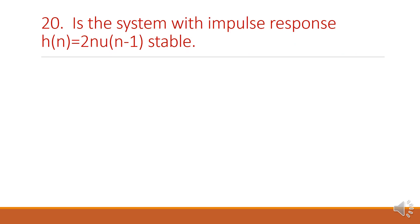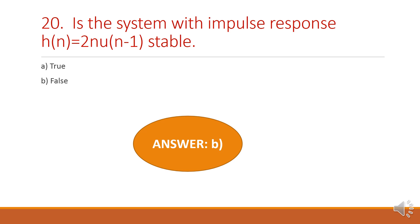Next question: is the system with impulse response H of n equals 2^n multiplied by U of n minus 1 stable? Option B is the right answer — the statement is false because the system is unstable.